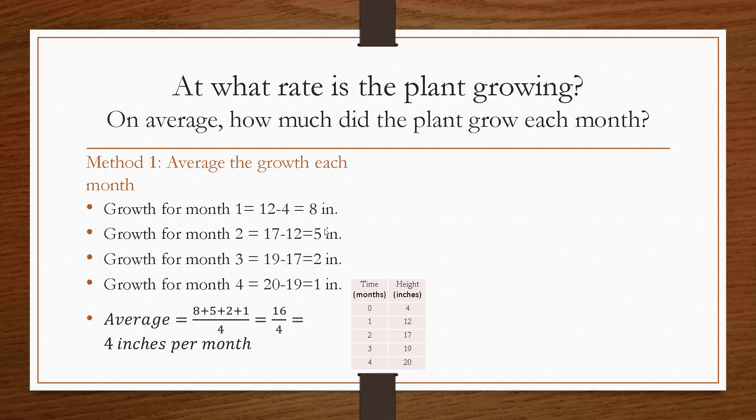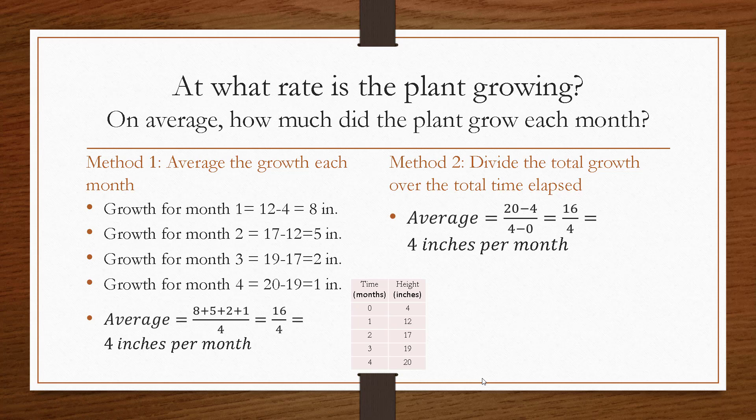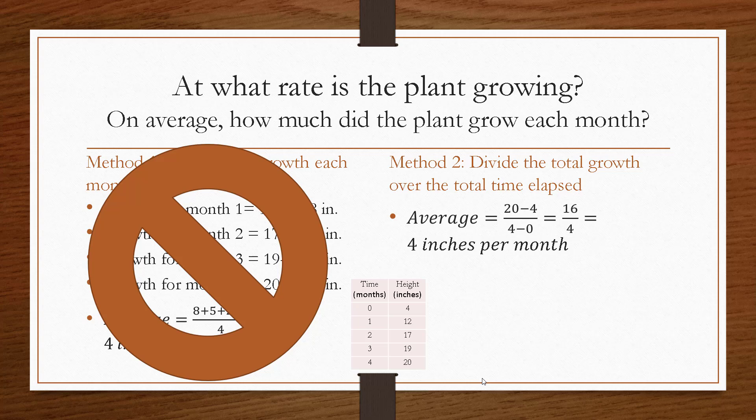And while this is correct, this was somewhat of a tedious calculation. We can do better. So another method to look at this is to say the plant grew a total of 16 inches because it started off at 4 inches and ended at 20, and 4 months passed. So if we divide that total growth over the total time elapsed, we would get the same answer. 16 over 4 is 4 inches per month. This is a much simpler way to calculate an average rate of growth, and this is the way we'll do it in this class. So let's not do method 1, even though that might be more intuitive.